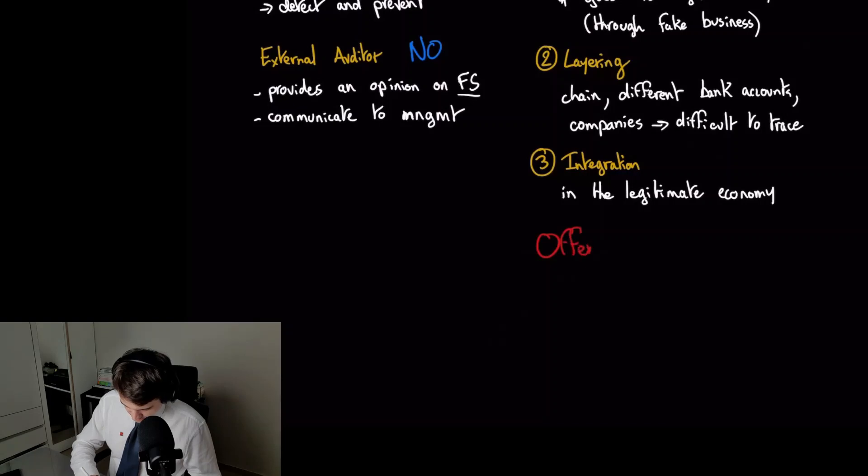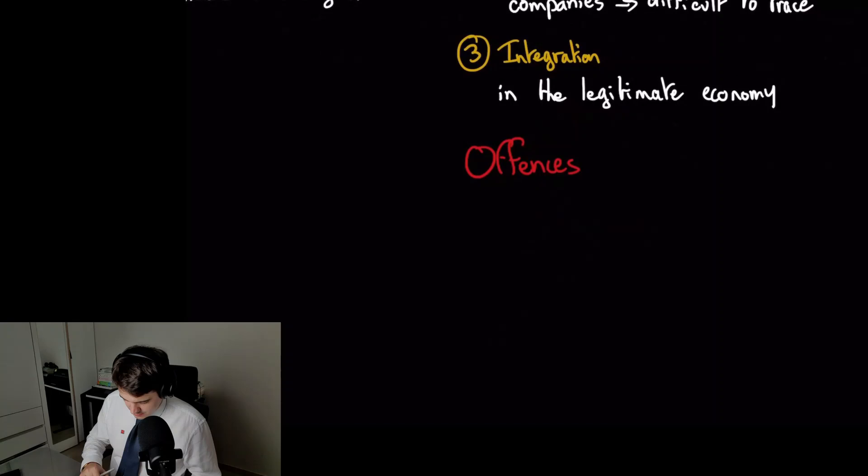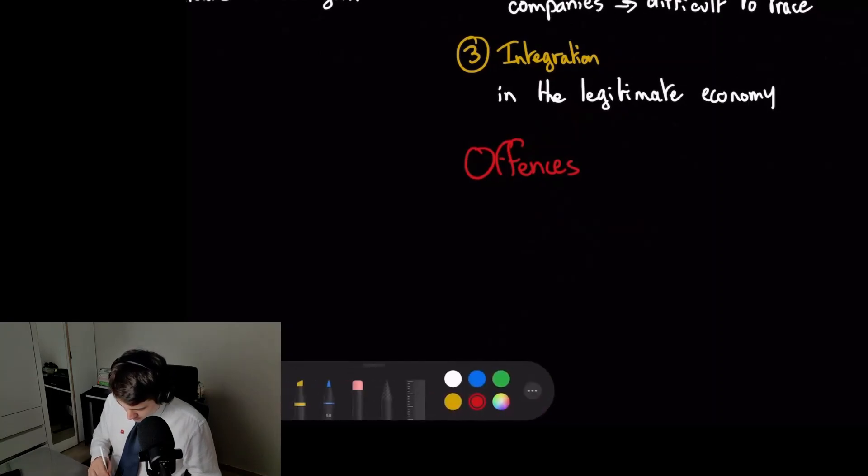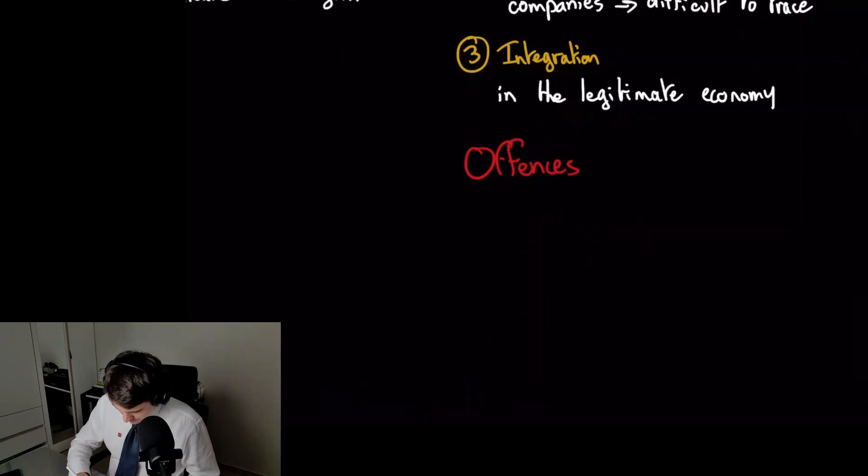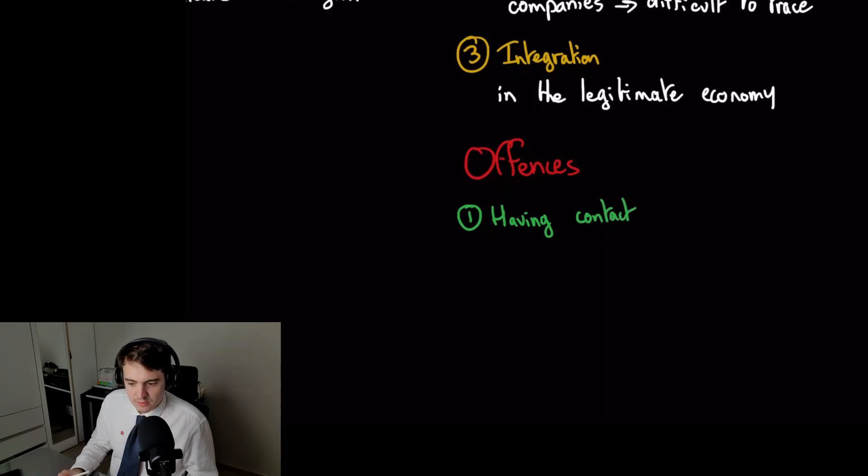If I quickly mention the offenses that you may face as an accountant, there are three types. First is having contact - so you simply having contact with that dirty money, even if you don't know, deliberate or accidental. Even if you don't know, you will be going to jail. It's still your fault, so even if you don't know, simply being in contact with that dirty money.